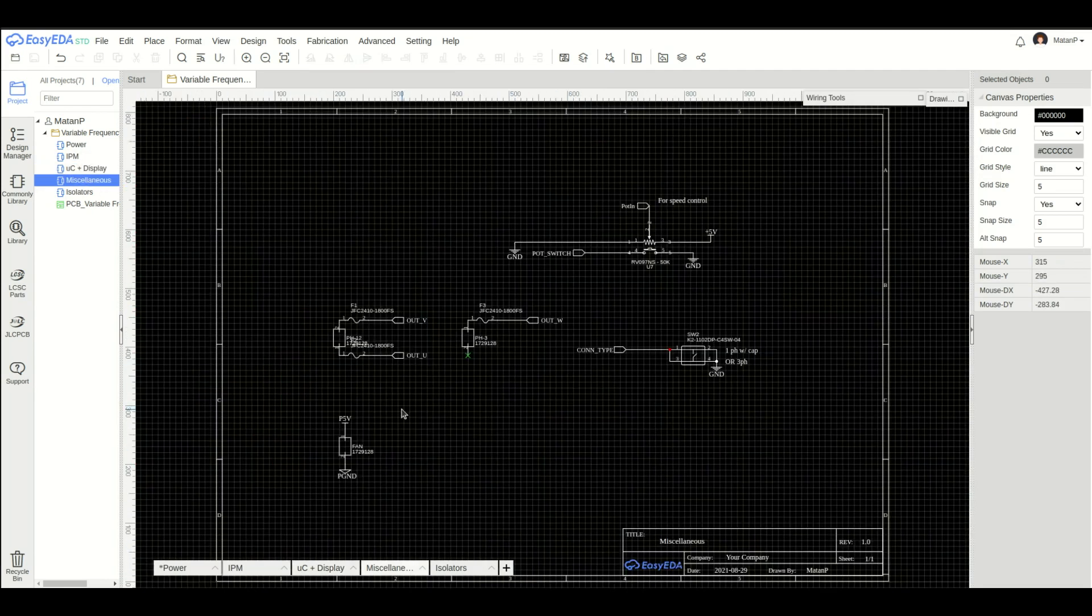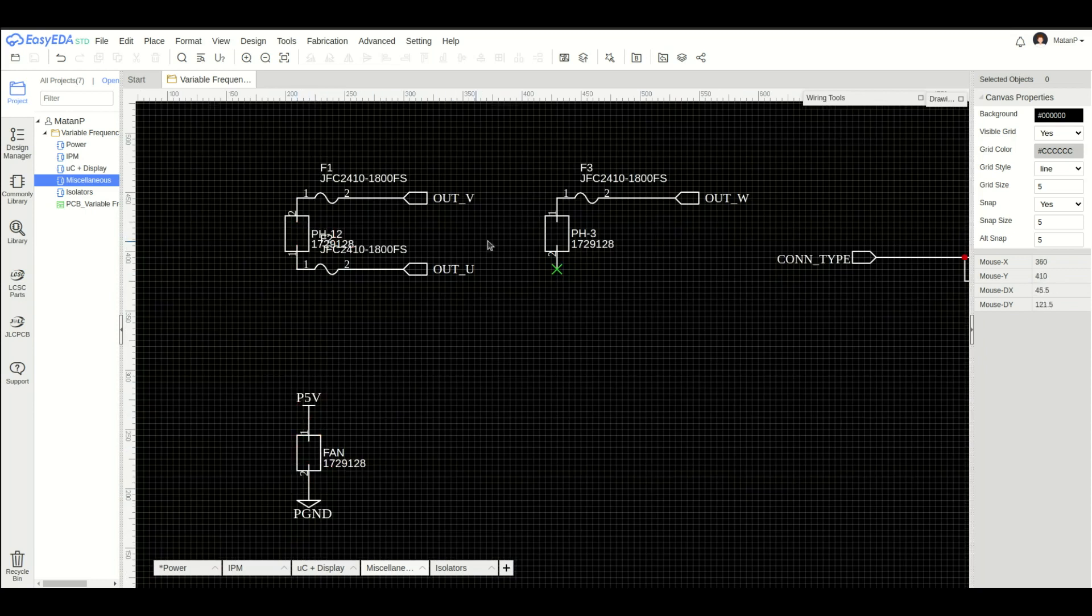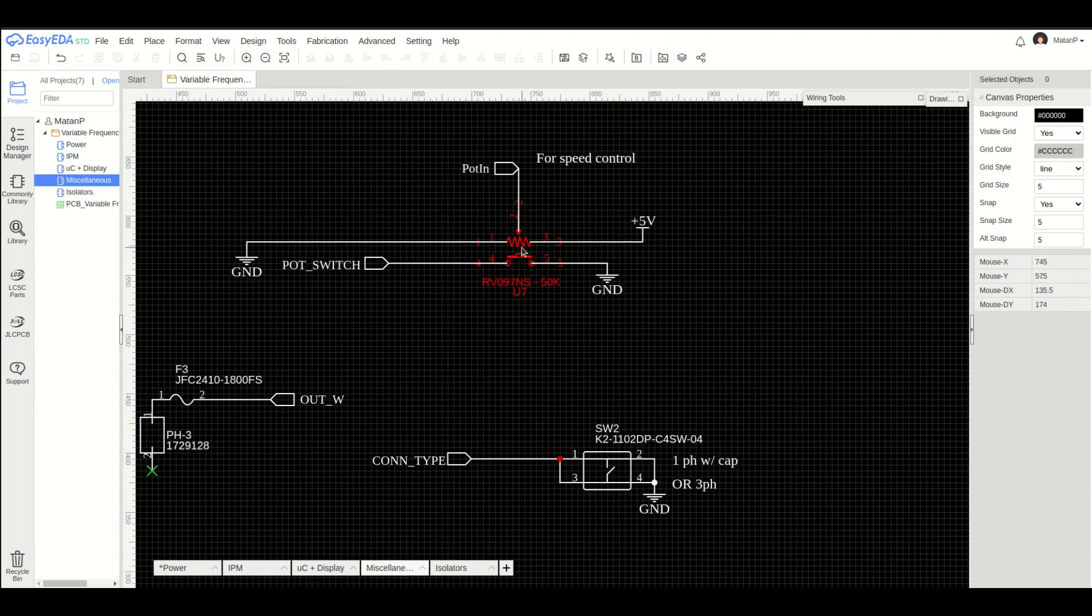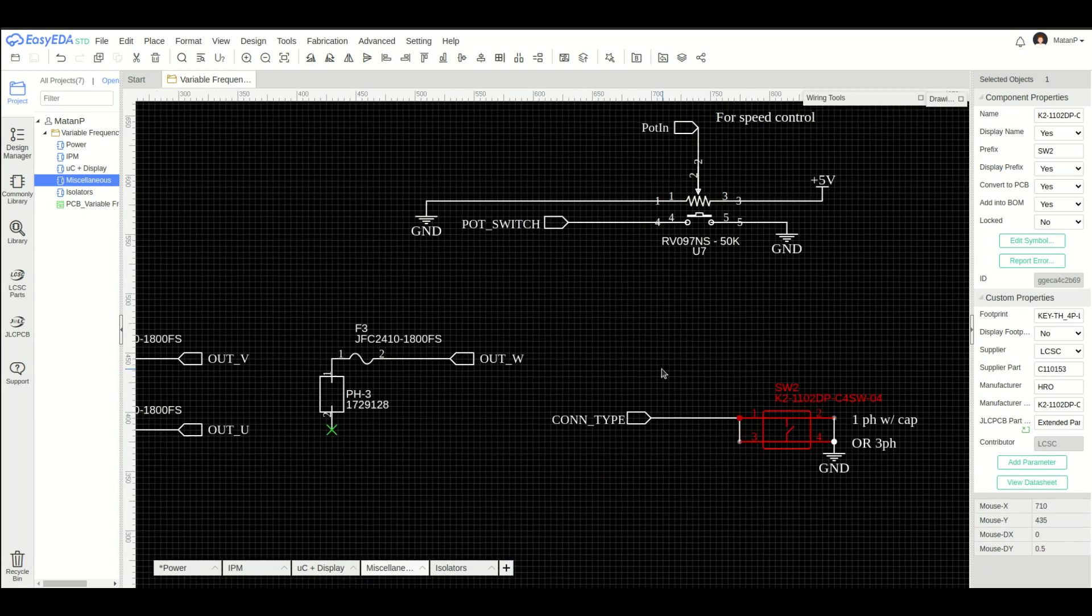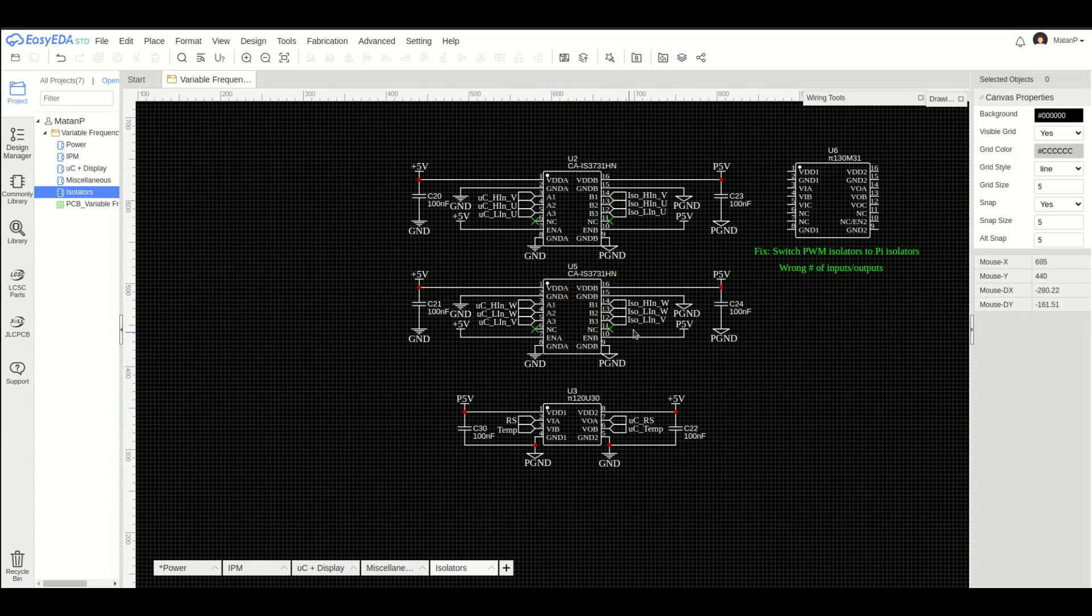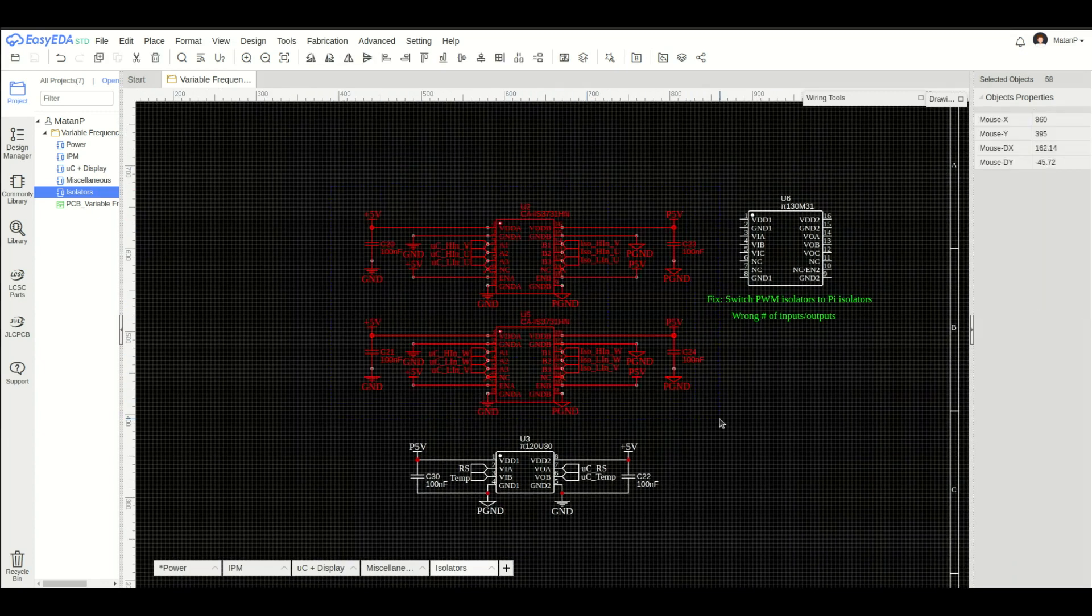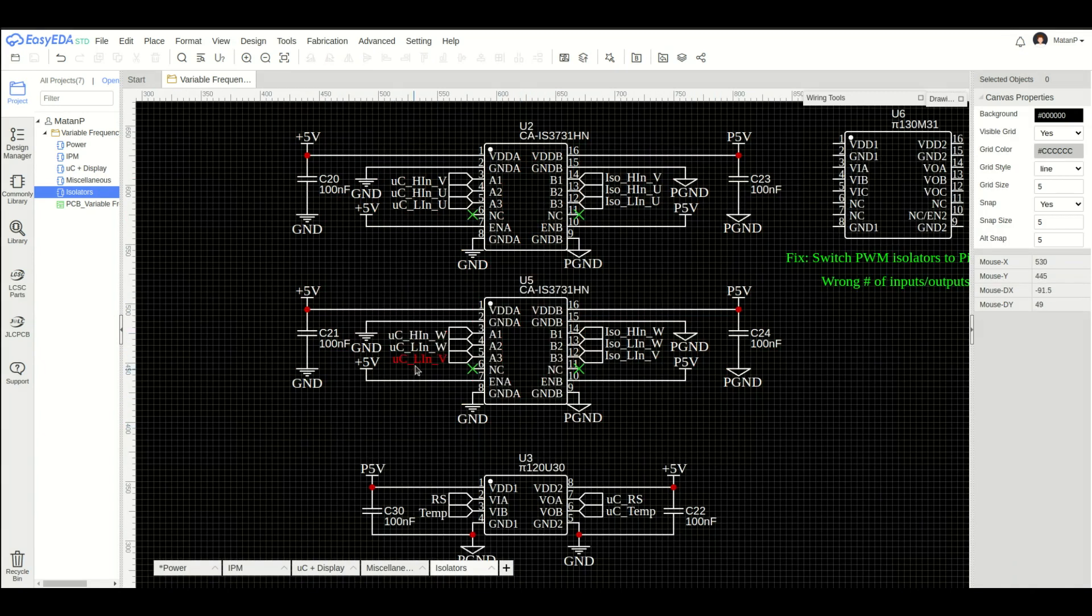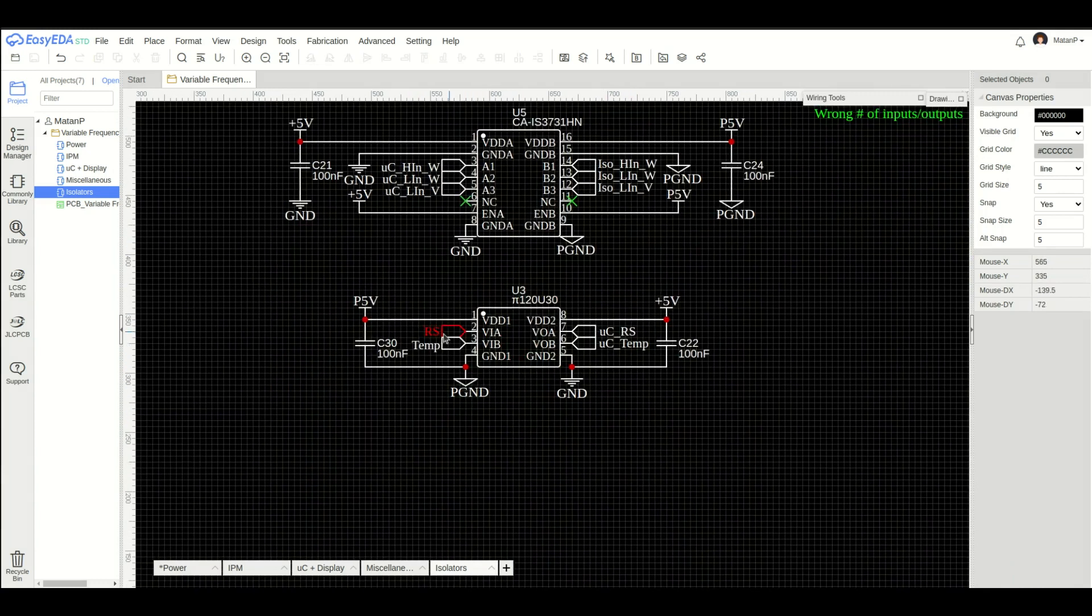This is the miscellaneous block, showing the fan connector, the motor phases connectors, the potentiometer, and the button. And this is the isolator block. The top two isolators transmit the PWM signals from the microcontroller to the IPM, and the bottom one transmits from the high voltage side, the temperature, and the measured current.